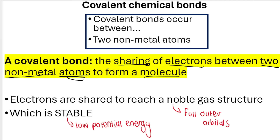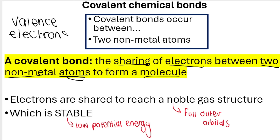Why would atoms want to share? Because atoms want to share their valence electrons — it's the valence electrons or outer electrons which are shared. They want to share these electrons because they want to reach noble gas structure, in other words they want full outer orbitals. When two atoms combine and form a chemical bond, they do so because they want to fill their outer orbitals, which makes them more stable and gives them a lower potential energy.